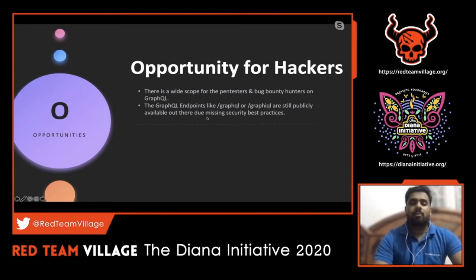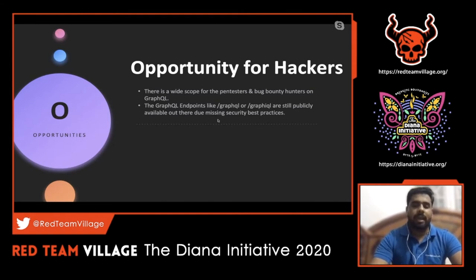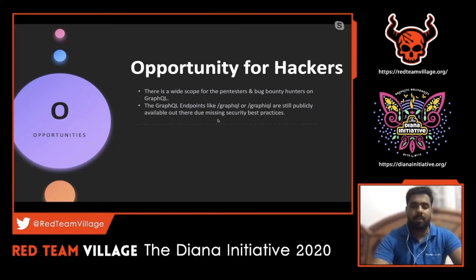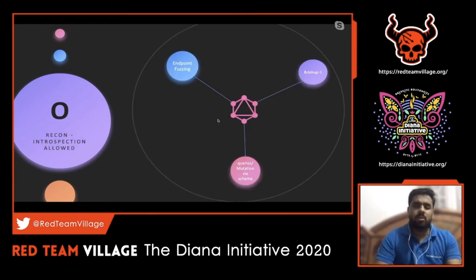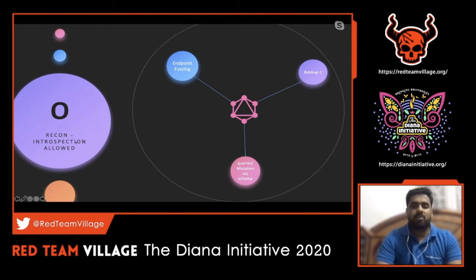Accessing the GraphQL development console publicly is sometimes reported as a vulnerability - running an introspection query exposes all queries, mutations, and subscriptions, which is an information disclosure. Some bug bounty programs may not treat it as serious, but misconfigurations can lead to real impact. For GraphQL pen testing, recon starts with introspection - crafting a query that pulls schema information from the backend.